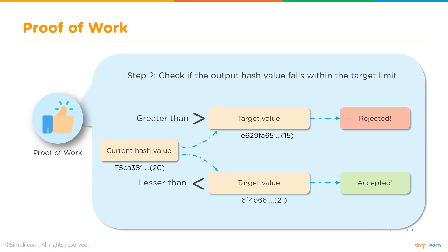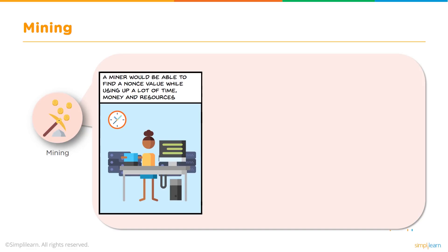The miner has to find a nonce value which must produce a hash less than the target value. If they find a value greater than the target, their mining effort is rejected. But if they successfully generate a hash value using the nonce that is less than the target value, the effort is accepted. This is where the entire computational and hardware power of a miner is used to generate that nonce value in a stipulated amount of time — that's why they invest in hardware to get a reward as their return on investment.